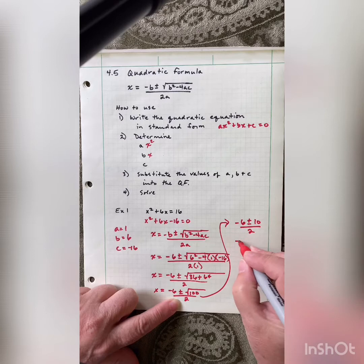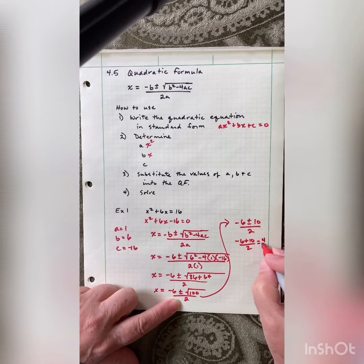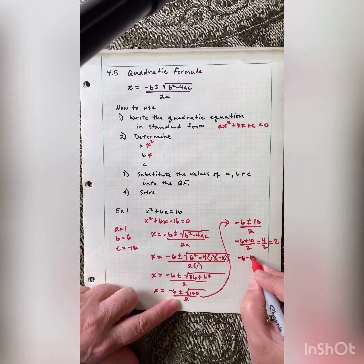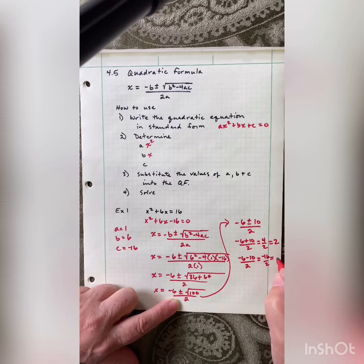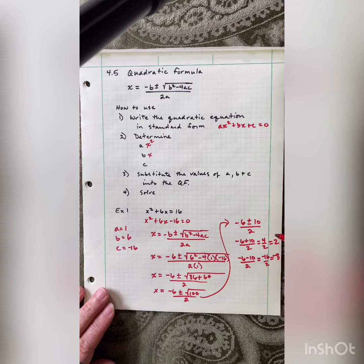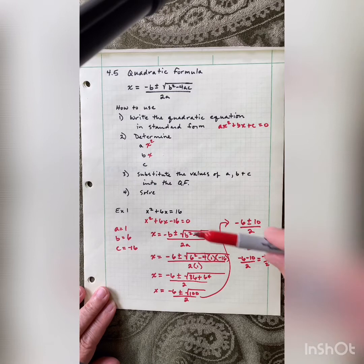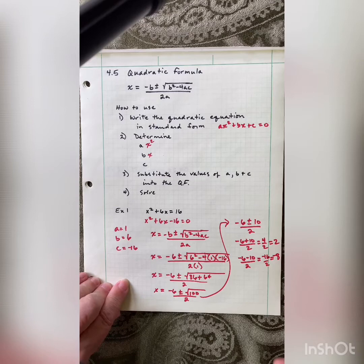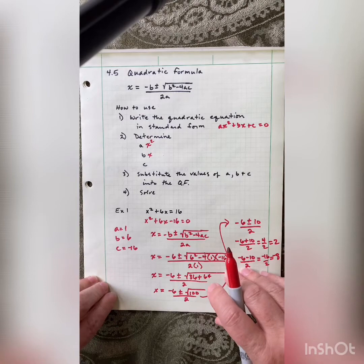Now we need to do this twice — once for the positive and once for the negative. Negative 6 plus 10 over 2 gives me 4 over 2, which is 2. And negative 6 minus 10 over 2 gives me negative 16 over 2, which is negative 8. So our answers are 2 and negative 8. With such nice answers, you could have factored this one fairly easily. And remember, our solutions are x-intercepts.